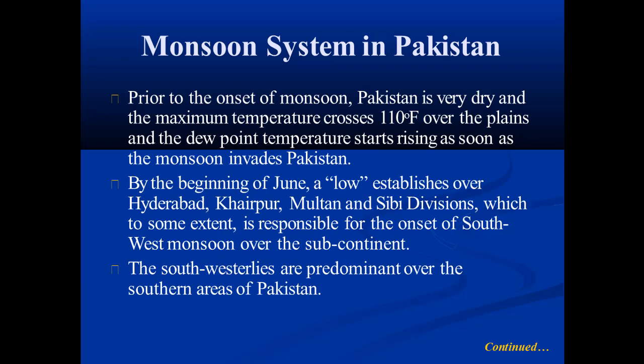Prior to the onset of monsoon, Pakistan is very dry and the maximum temperature crosses 110°F over the plains. The dew point temperatures start rising as soon as the monsoon invades Pakistan. By the beginning of June, a low is established over the Hyderabad–Khairpur–Multan–Sibi division, which is to some extent responsible for the onset of the south-west monsoon over the subcontinent.